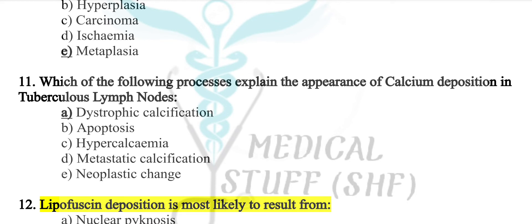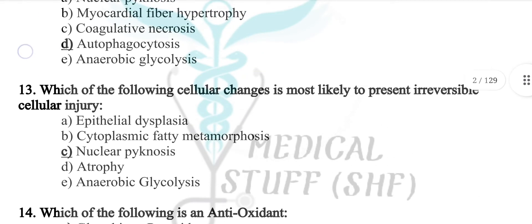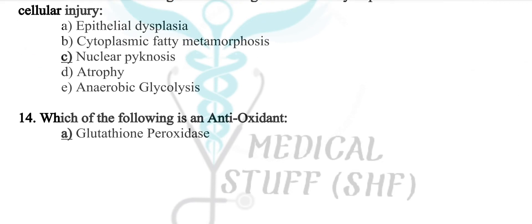The process that explains calcium deposition in a tuberculous lymph node is dystrophic calcification. Lipofuscin deposition is most likely to result from autophagy. The cellular change most likely to represent irreversible cell injury is nuclear pyknosis. Which of the following is an antioxidant? The answer is glutathione peroxidase.